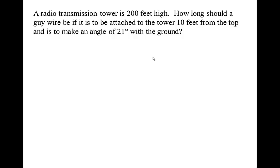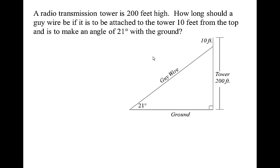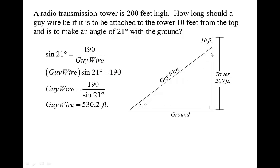A radio transmission tower is 200 feet high. How long should a guy wire be if it's attached to the tower 10 feet from the top and makes an angle of 21 degrees with the ground? The tower is 200 feet high, backed off 10 feet gives us 190 feet. A guy wire is just the wire that holds it up. 21 degrees is our angle, and we want the hypotenuse — the guy wire length. So sine of 21 equals 190 over the guy wire; multiply by the guy wire and divide by sine 21 degrees, and the guy wire comes out to 530.2 feet.